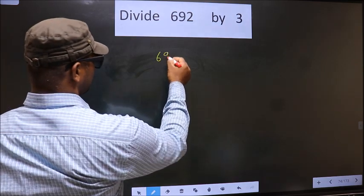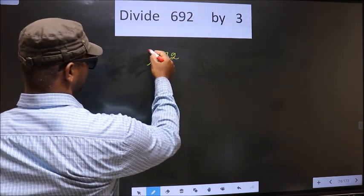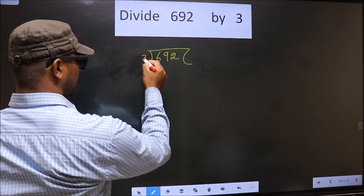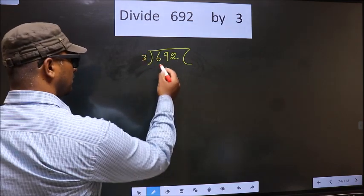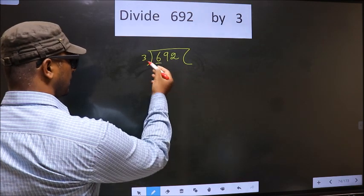That is 692. 3 here. Okay. Next. Now, here we have 6. Here 3.